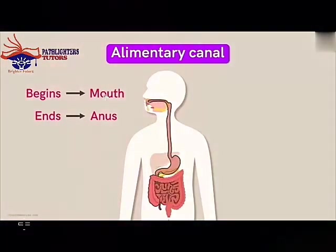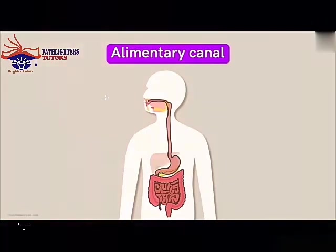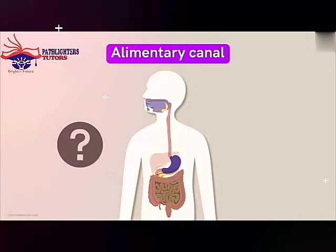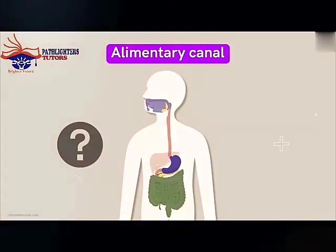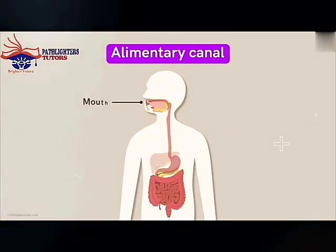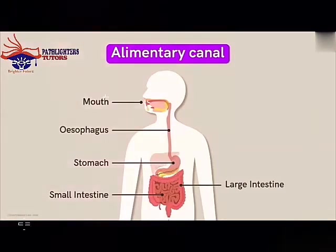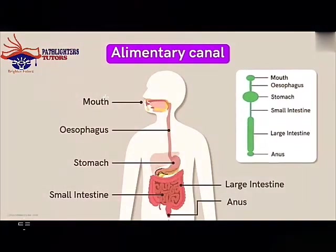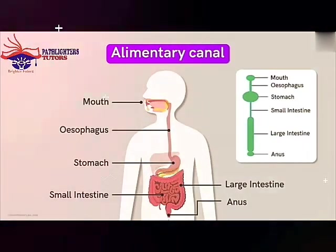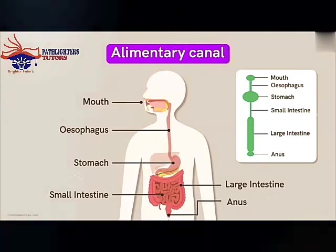The mouth, the esophagus, the stomach, the small intestine, the large intestine, and the anus are all in continuation — a continuous tube. The digestive system is a long muscular tube with varying diameters at different locations, and these varying diameters give us the various organs: the mouth, the esophagus, the stomach, the small intestine, the large intestine, and the anus.